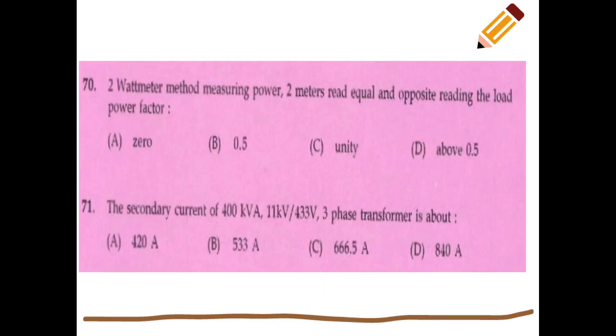A choke coil has inductance and resistance. In the two-wattmeter method of measuring power, when the two meters read equal and opposite readings, the load power factor is zero.